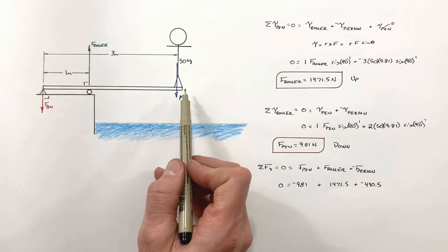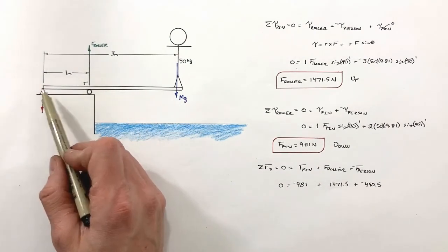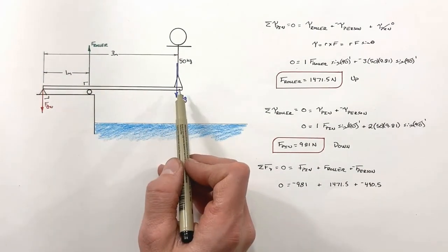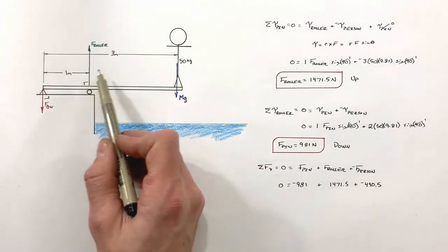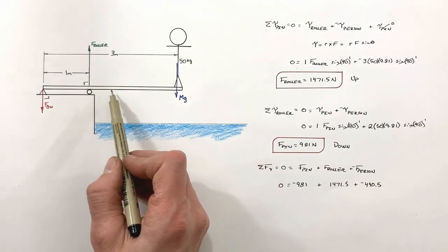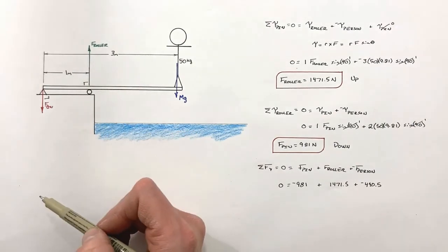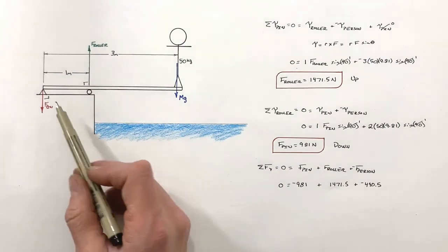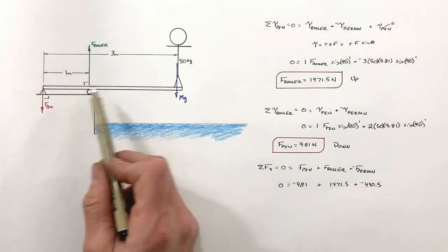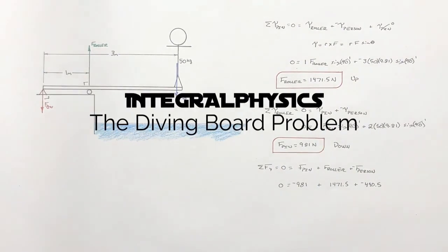Sometimes this problem is presented differently — for example, with the board supported at both ends and a mass in the middle, or with mass added to the diving board itself. These are just variants of the same problem. That's the diving board problem.